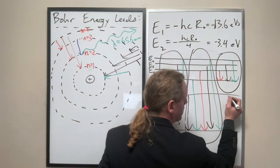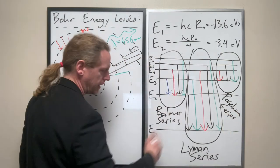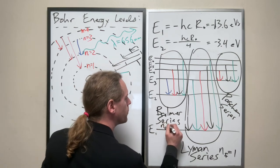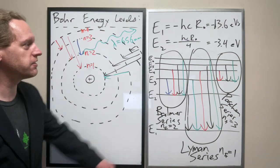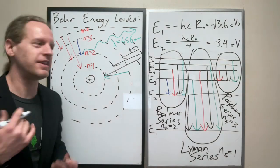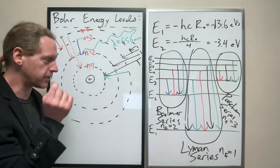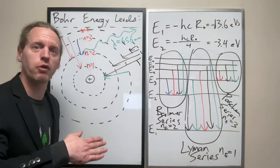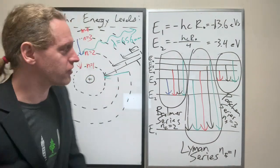The Paschen series right here, as you're probably predicting, and I'll write this out. Lyman series, Nf equals 1. Balmer series, Nf equals 2. Paschen series, Nf equals 3. The Brackett series are the set of transitions that end in level 4. And so this is the physical interpretation of why hydrogen gives off only discrete predictable wavelengths. It's like you have an elevator that can only stop on the floors, you can't stop on level 3 and a half. And I mean, that actually is a fairly reasonable analogy there.